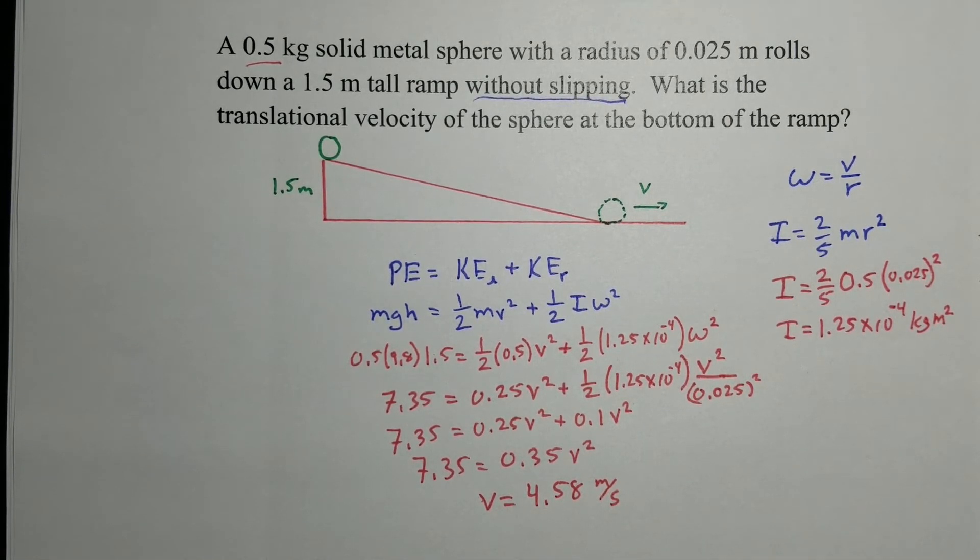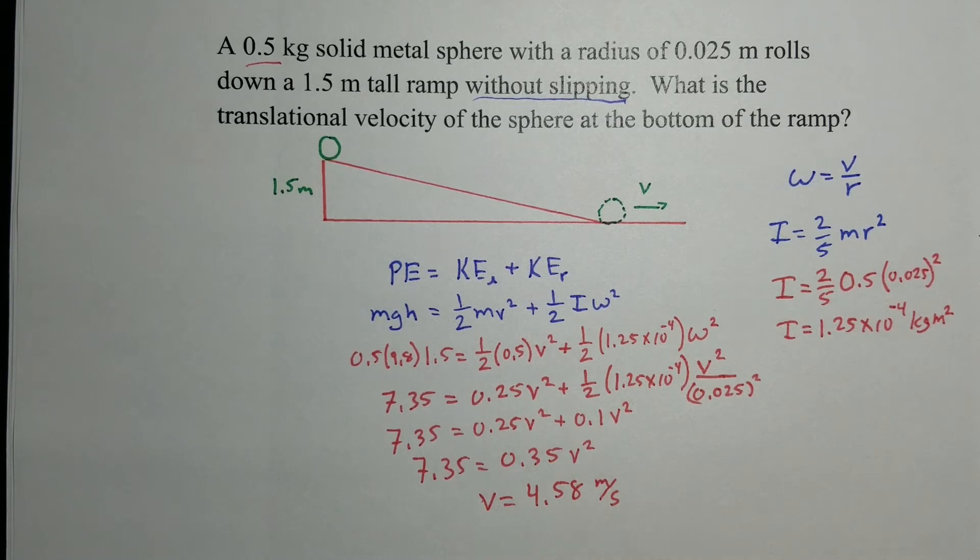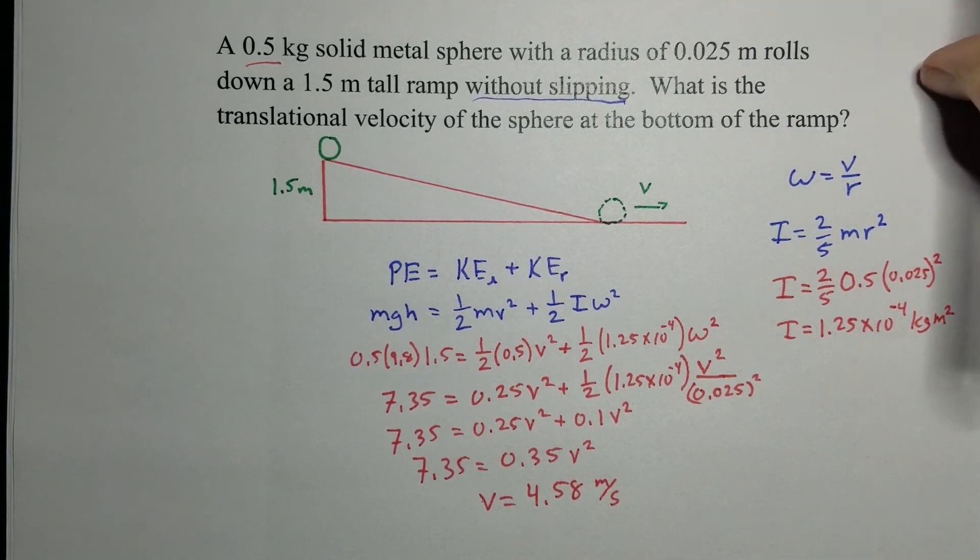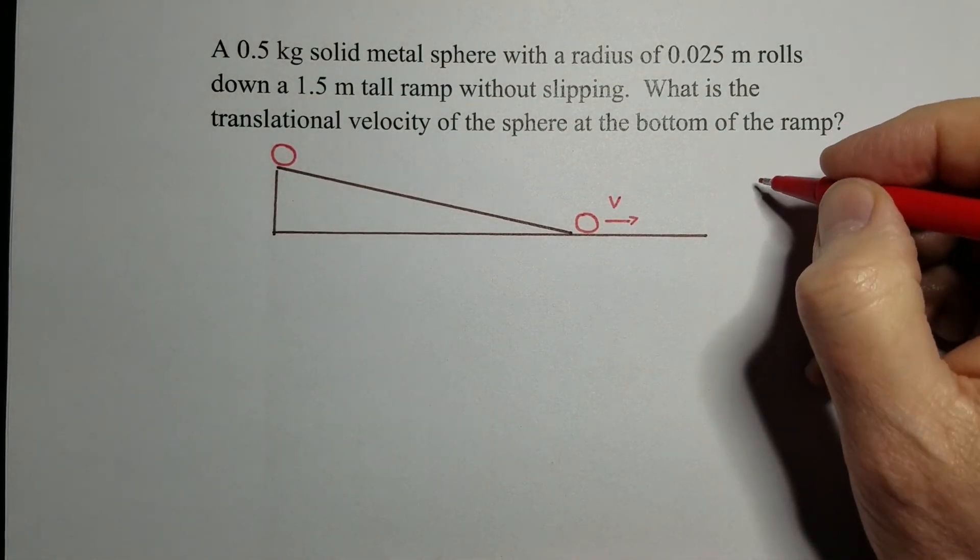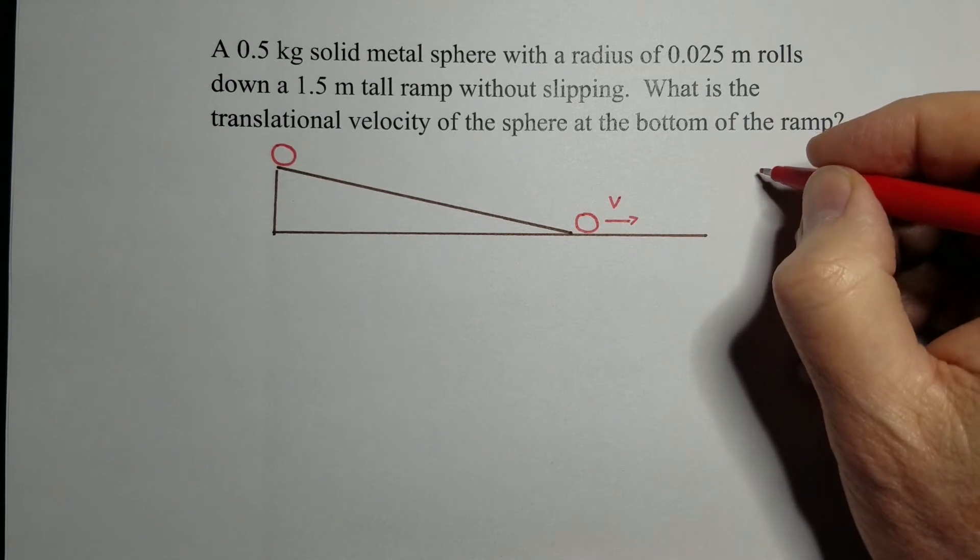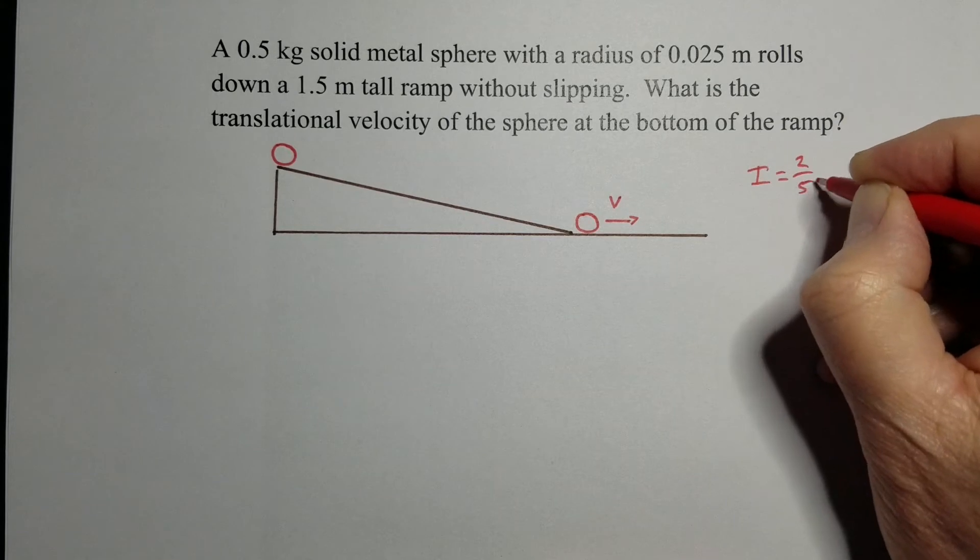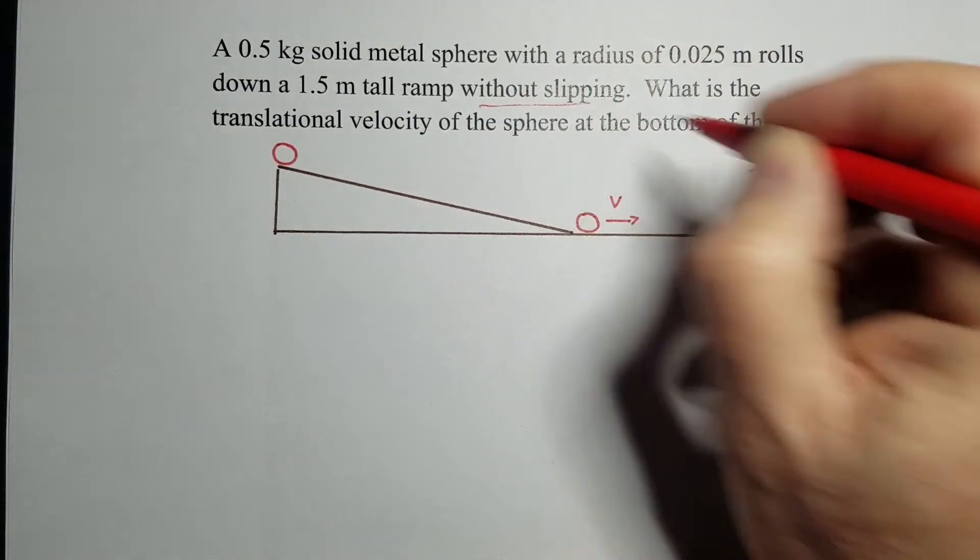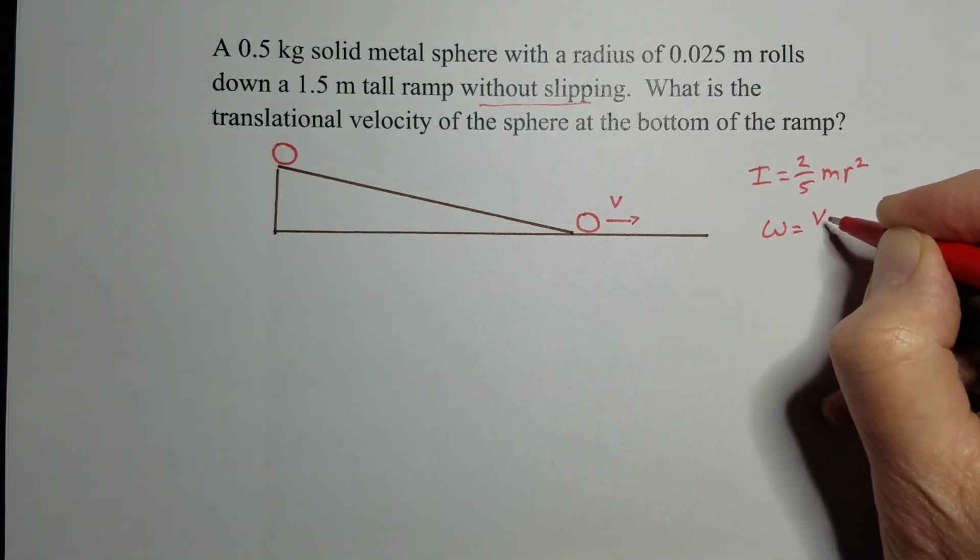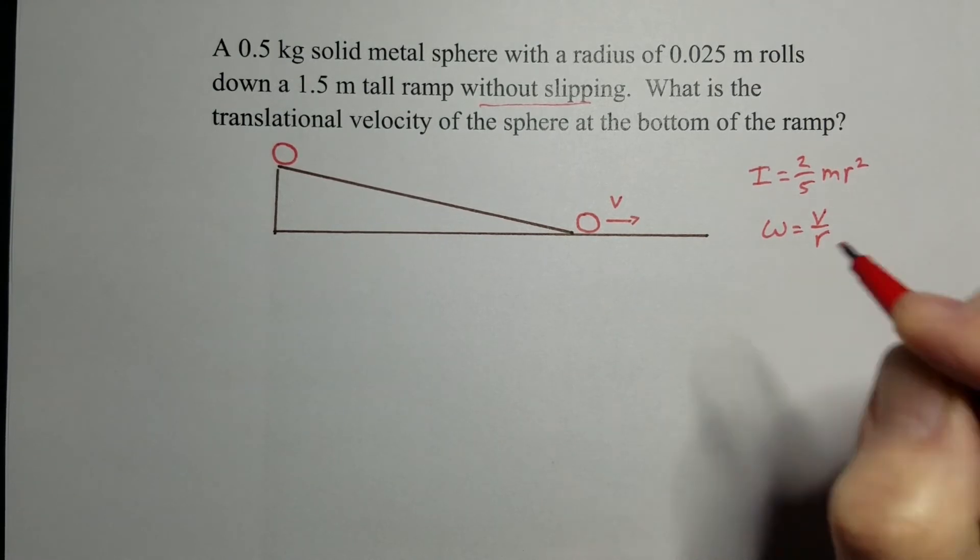Now let's do this again, except this time, let's solve some things algebraically and we'll see how that cleans up this problem. So, same problem. Now, let's just use some letters. So, the moment of inertia for a sphere is two-fifths m r squared, and without slipping, that means omega can be substituted for v over r, velocity over radius. And let's do the same thing.